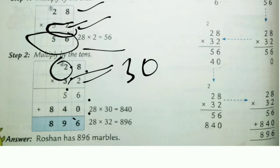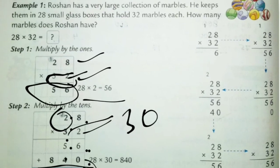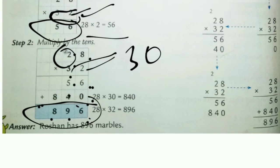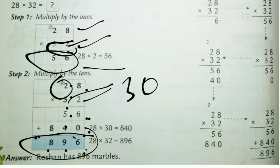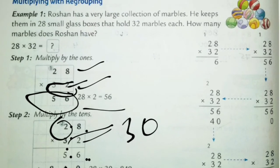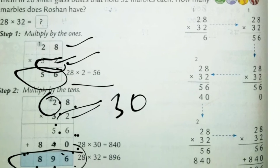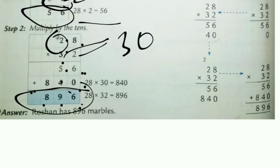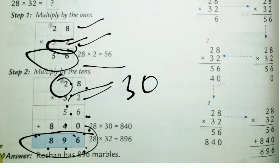3 eights are 24, put down 4 and carry 2; 3 twos are 6 plus 2 is 8. Then add: 6 plus 0 is 6, 5 plus 4 is 9, and 8 remains. This is multiplying with regrouping. Note that 32 into 28 or 28 into 32 gives the same answer.